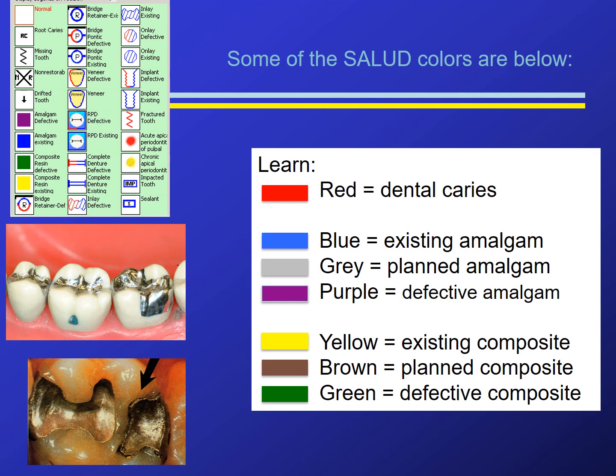Here we see the colors in Salud used to represent operative procedures — the drilling and filling portion of dentistry. Blue, gray, and purple represent amalgams; yellow, brown, and green represent composite. The difference between the colors indicates whether the restoration is existing, planned, or defective. Blue and purple are seen on the diagnosis tab, while gray is seen on the treatment planning tab.